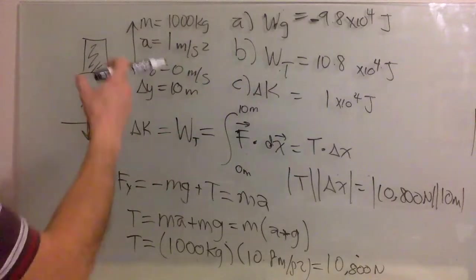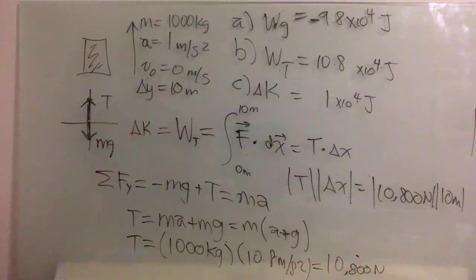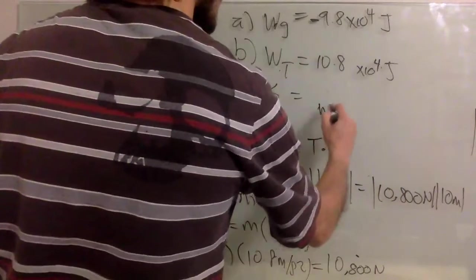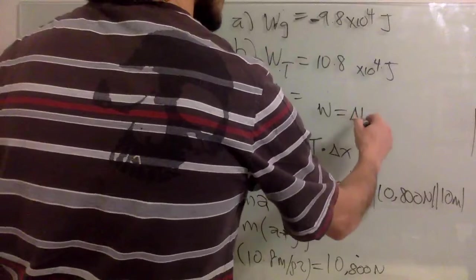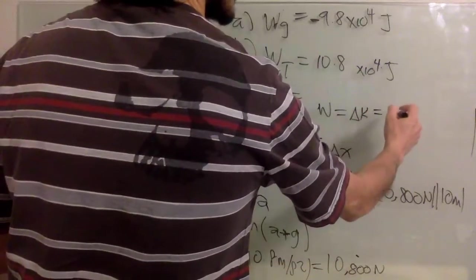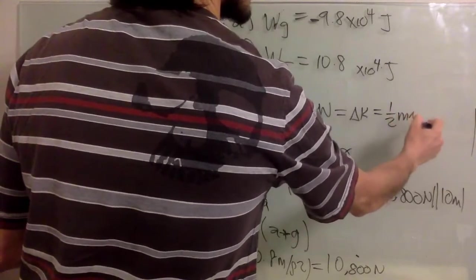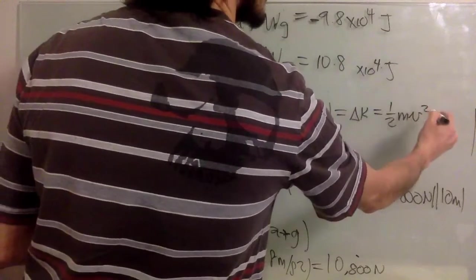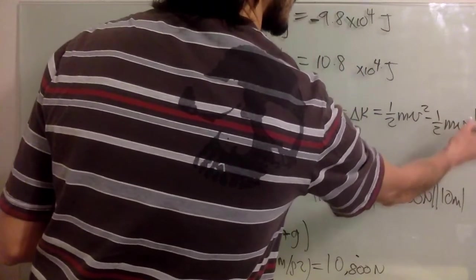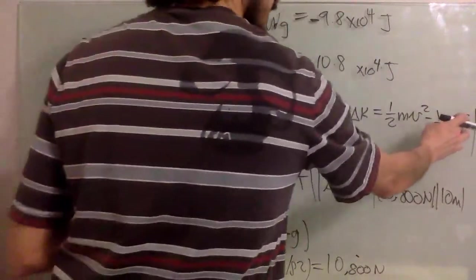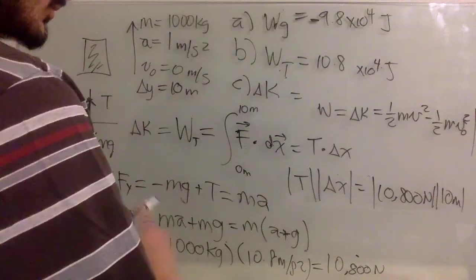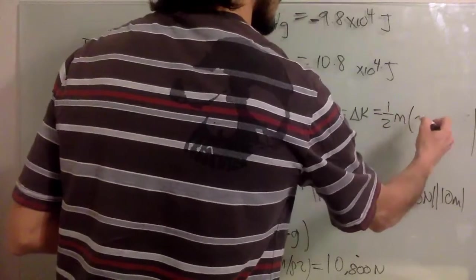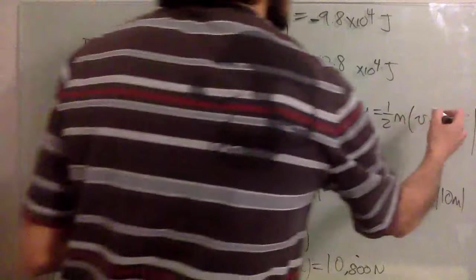All of that work becomes kinetic energy. Kinetic energy is one half mass times the final velocity squared minus one half m times v-naught squared — the initial velocity. Since the mass is not changing, this is one half m times (v² minus v-naught²). The initial velocity is zero so we can get rid of that term.